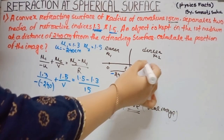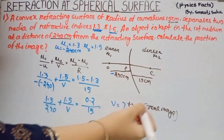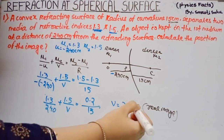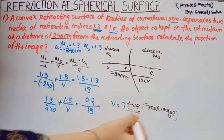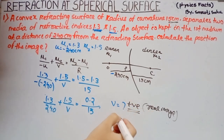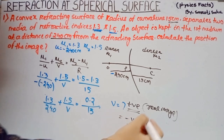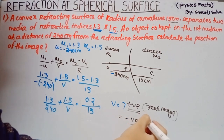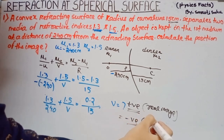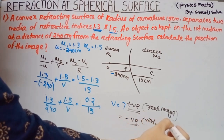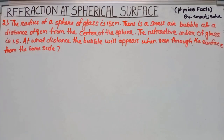That is the image produced. We got a real image. But if the sign convention gives v as negative, that means it is a virtual image. Now go to another numerical.